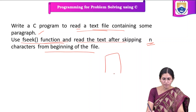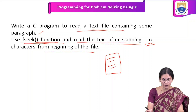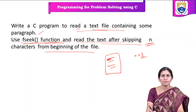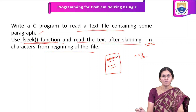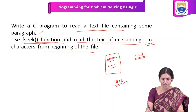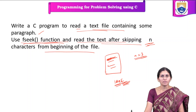This program says that we already have a text file with some information, and by using the fseek function, we have to read the text by skipping n number of characters from the beginning of the file. Suppose the user specifies n as 3, then by skipping 3 characters from the beginning, the program has to print whatever remains after the third character — that is, all remaining characters are printed on the screen.